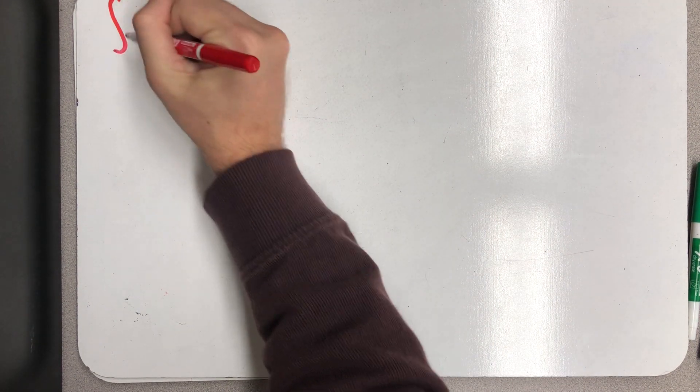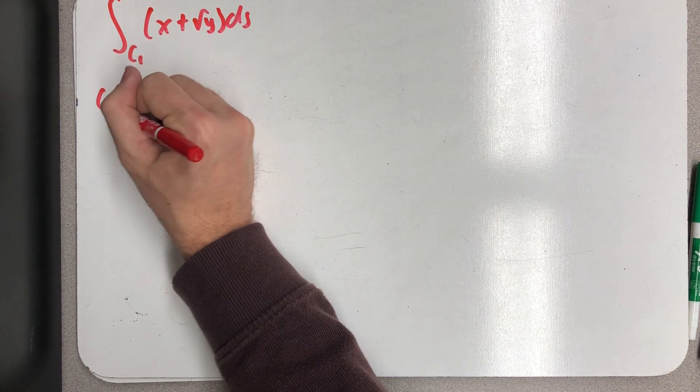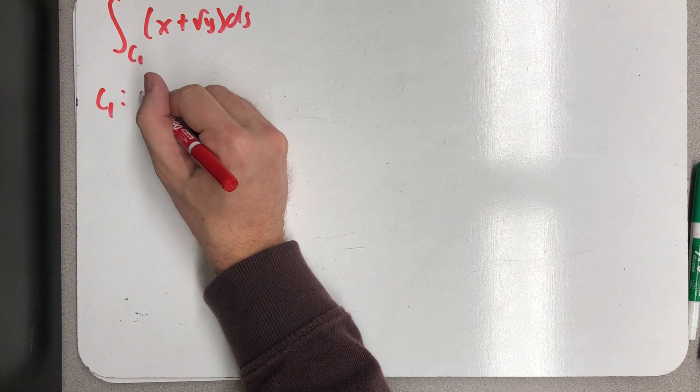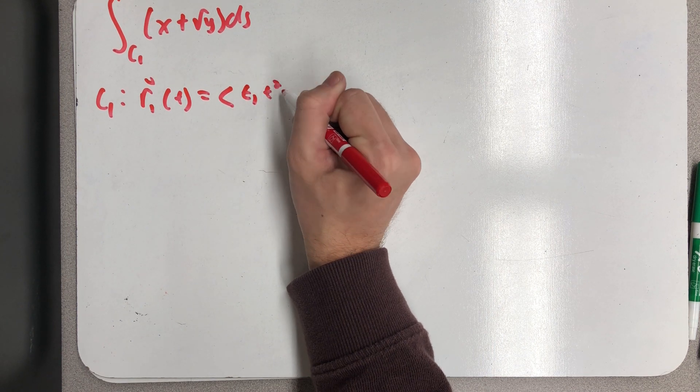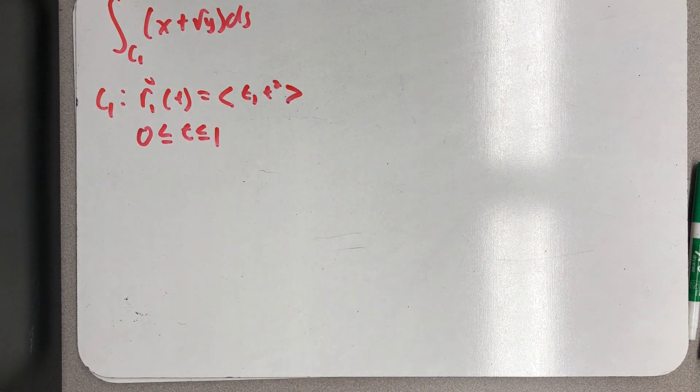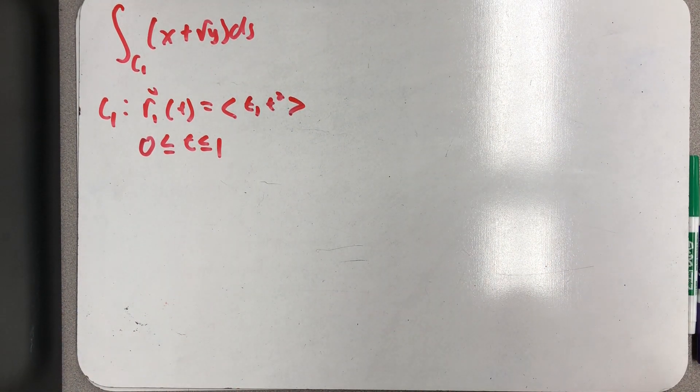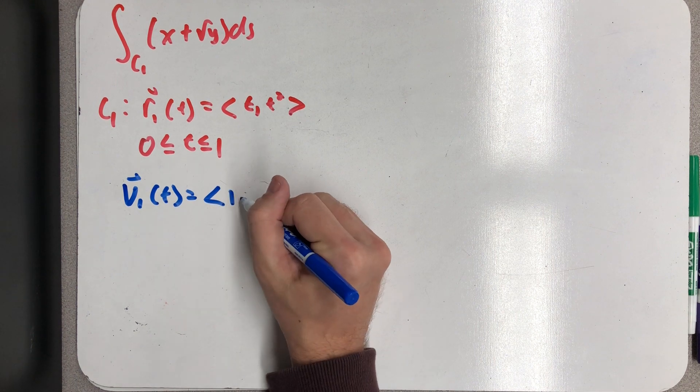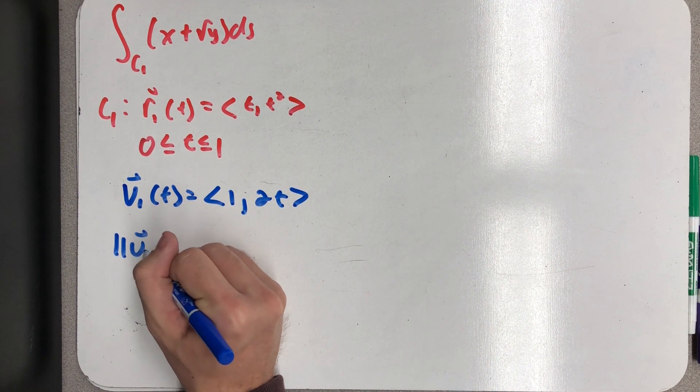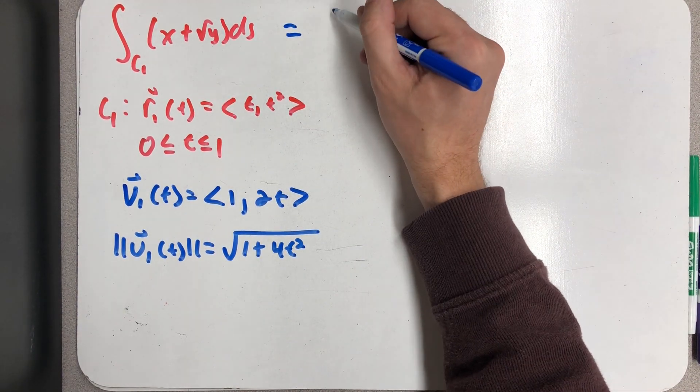So to start off, we'll evaluate a path integral over C1, where C1 was my parabolic path. So nothing really different here. I just need to find a velocity function, the speed, and then do some substitution.